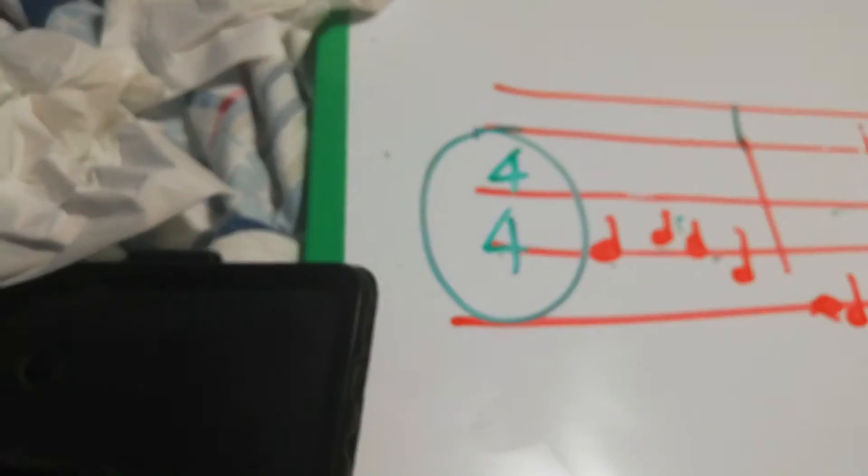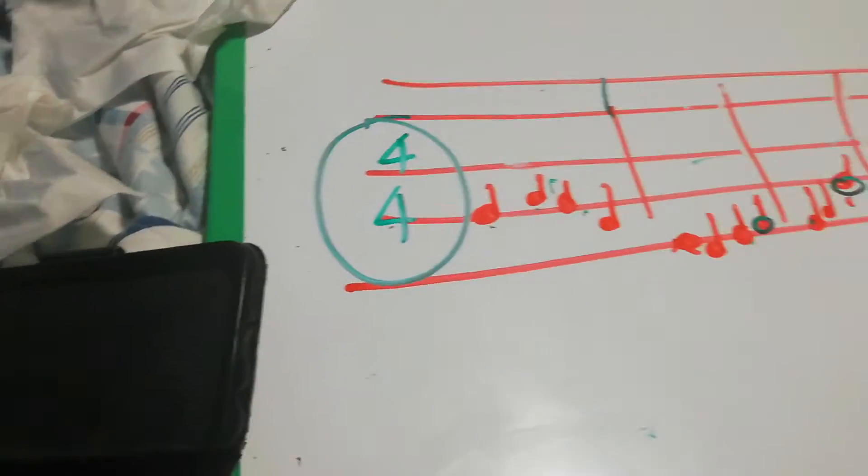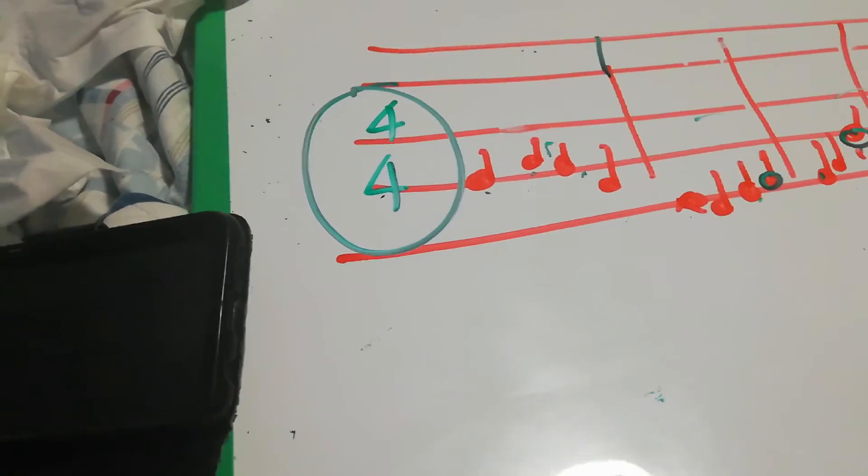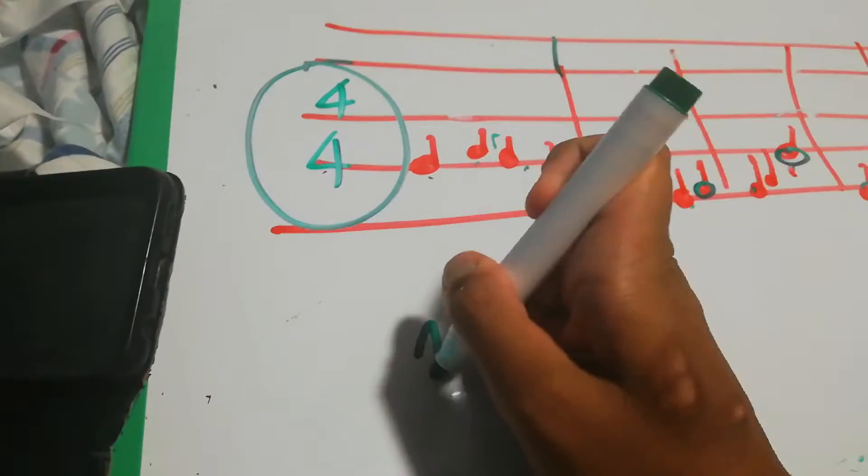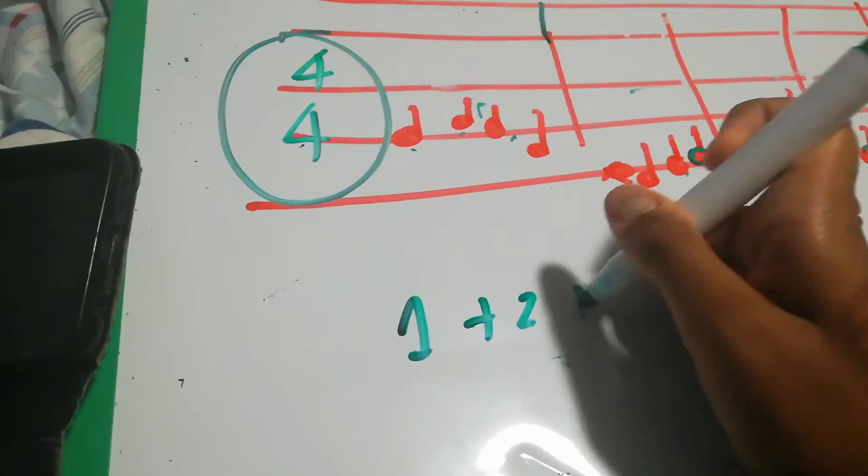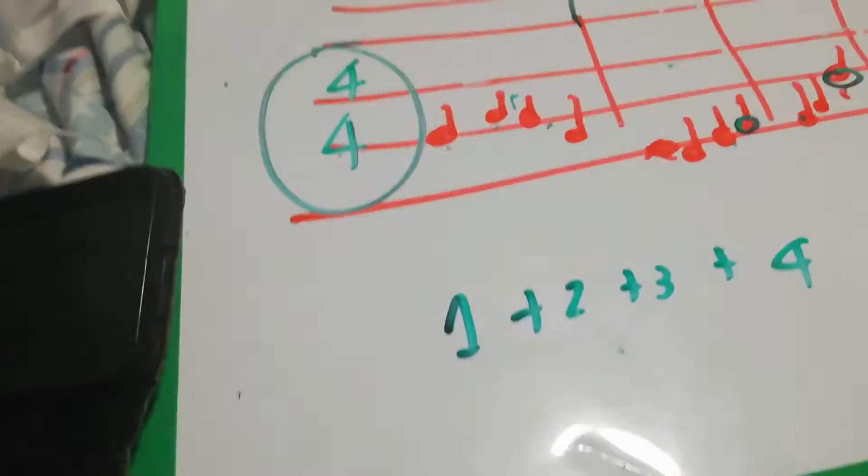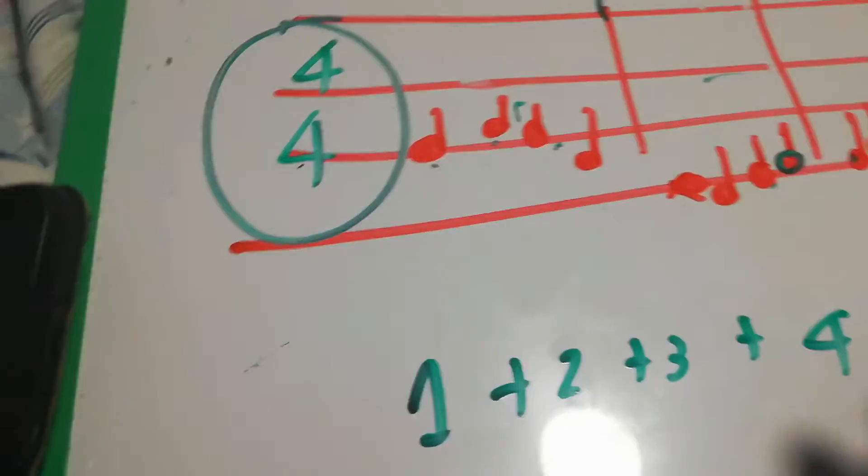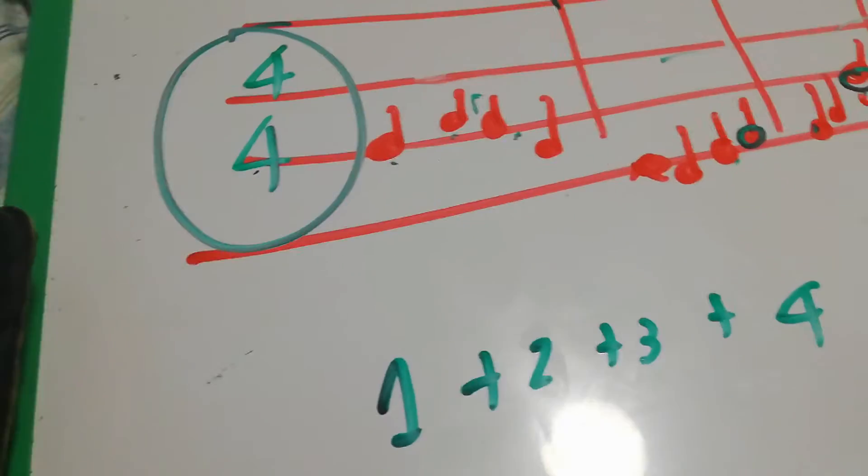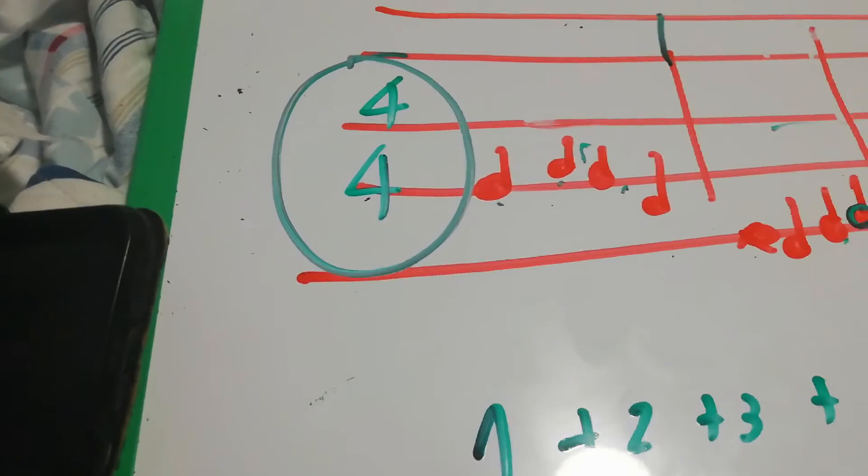This means that there are four beats per bar. So in music we usually count one two three four, one two three four, one two three four. They say the beat never stops, the beat just goes on, which is true because that's how music is.